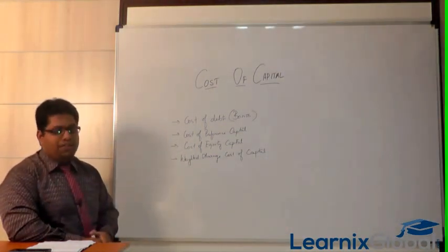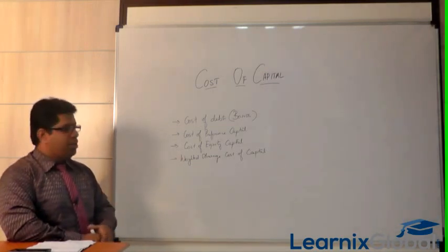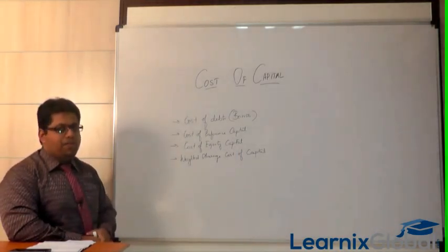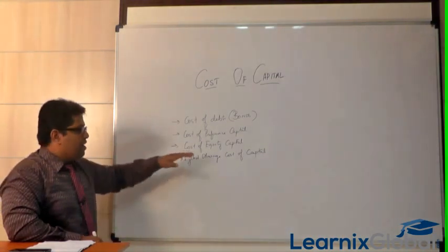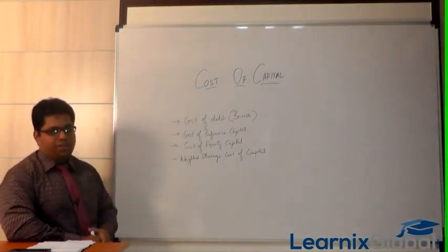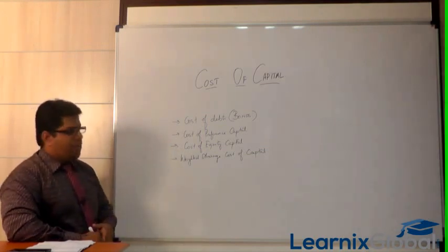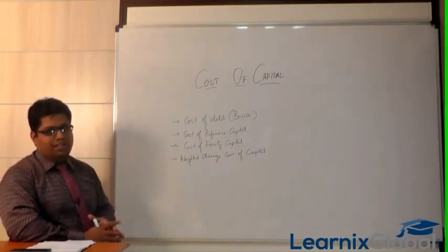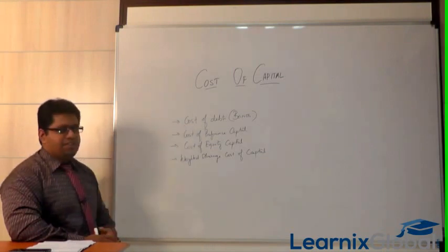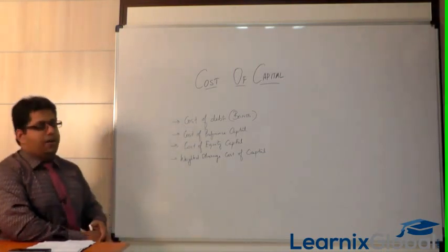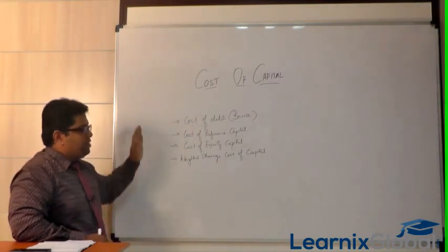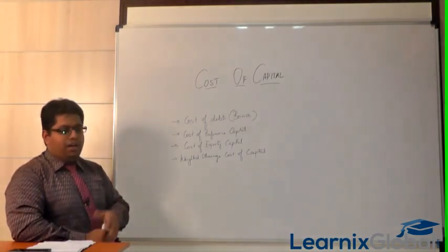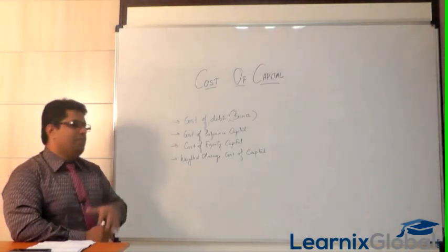Then there is the cost of equity capital — the money accumulated by selling equity shares, which also involves some cost. A company will not go with just one source; they will mix sources, for example 50% from equity, 25% from preference, and 25% from bonds. When mixing all these, you take the weighted average cost of capital.